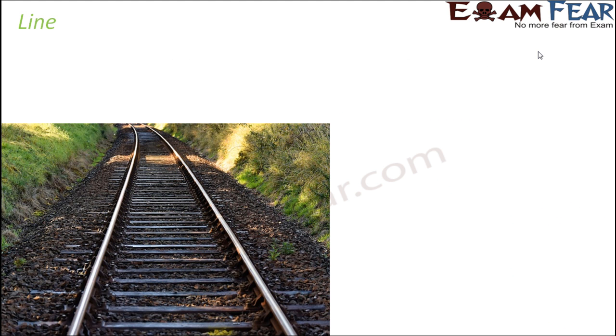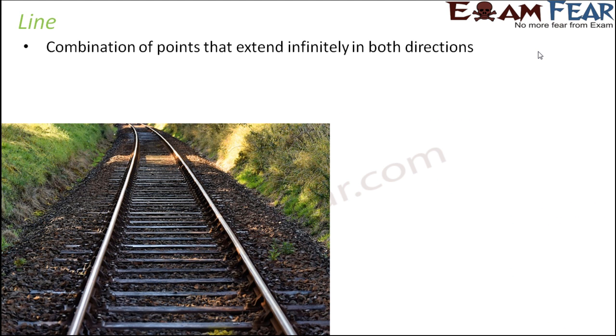The next one is line. Line is a combination of points that extend indefinitely in both directions - it continues infinitely in both directions. It is a lot of points put together one after another. When you think of line, you can think of railway lines or railway track that extends infinitely. A straight line is often represented with arrows on both ends which shows they are extending in both directions.